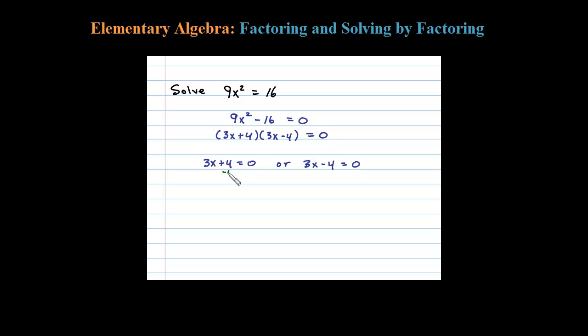Here first we would subtract 4, leaves us with 3x equals negative 4, then divide by 3. X then would be equal to negative 4 thirds. I'm going to leave that as an improper fraction.